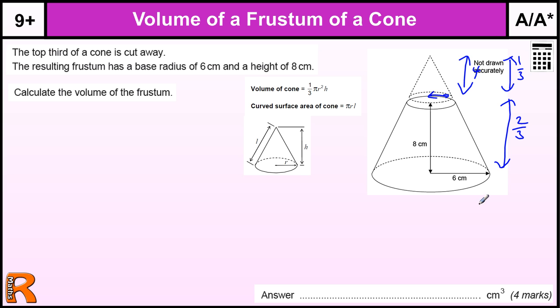And because this is 1 third of the whole, then this radius is going to be 1 third of the whole as well, so that's 6, so this is going to be 2.